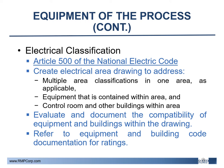Electrical classification of the process areas per Article 500 of the National Electric Code is required per the NDEP checklist. The creation of an electrical area drawing can prove to be efficient as it will simplify a situation where there are multiple area classifications in one area, and equipment, control rooms, and other buildings can be included in the drawing to demonstrate their electrical classification. Once this drawing is created, the evaluation and documentation of the compatibility of the equipment and buildings with their electrical area classification can then be completed. This information can be found in equipment and building code documentation for electrical ratings.